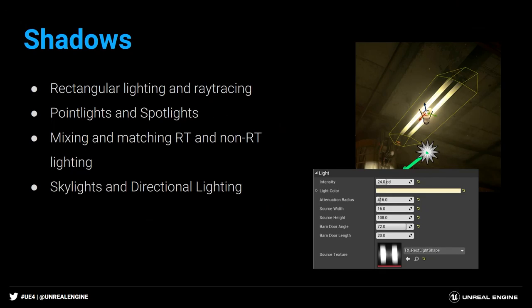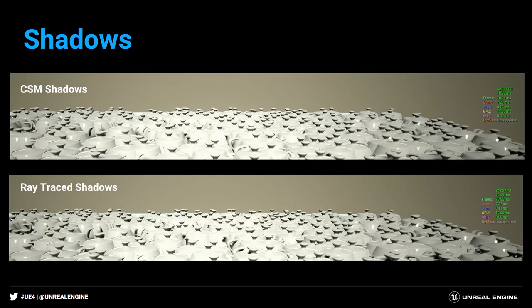Here's an interesting picture: the top is cascaded shadow maps, the bottom is ray traced shadows — directional light, a bunch of teapots. Cascaded shadow maps runs at 52 frames per second. The ray traced version runs at 73 frames per second. The really important message: ray tracing is not necessarily slower — it could in fact be faster than what we've been doing before. It really depends on what you're building and how you're building it.